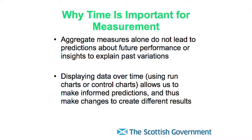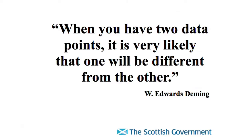Aggregate measures alone do not enable predictions about future performance or provide insights. Displaying data over time — which is key for improvement data — using a run chart, which is basically a time series graph, or a control chart which has upper and lower limits to assess variation. These charts allow us to make informed predictions and thus make changes to create different results. As Dr. Deming, the guru of improvement science from the 1920s and 30s in manufacturing, said: when you have two data points, it's very likely that one will be different from the other.